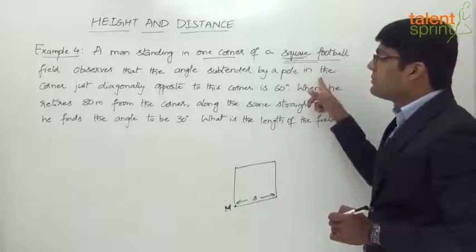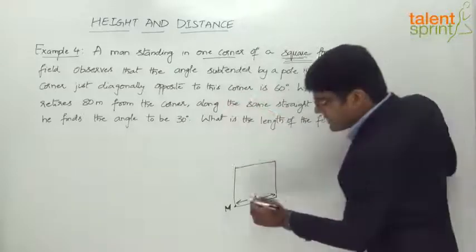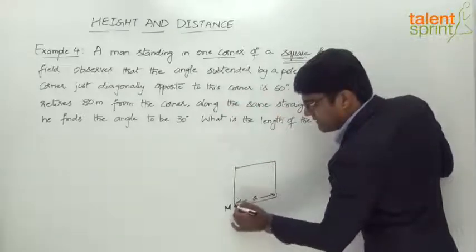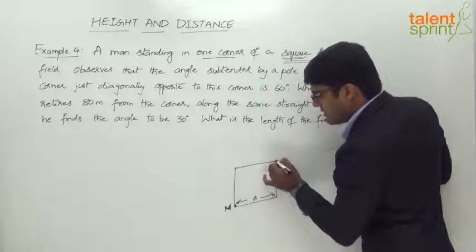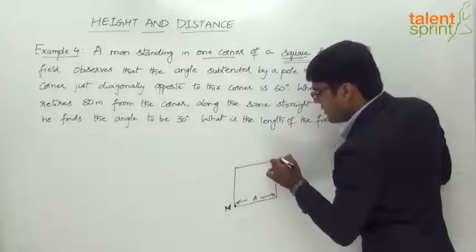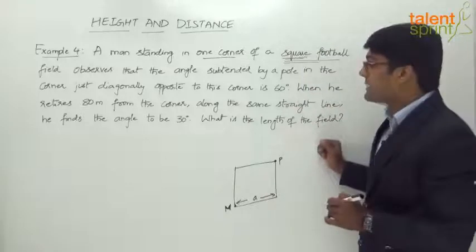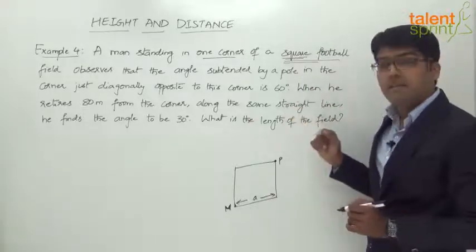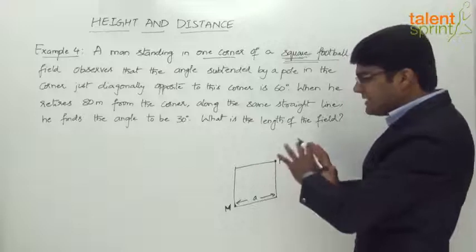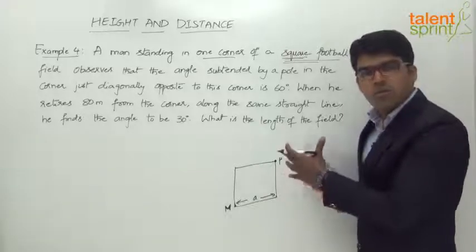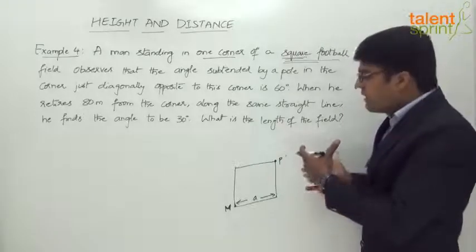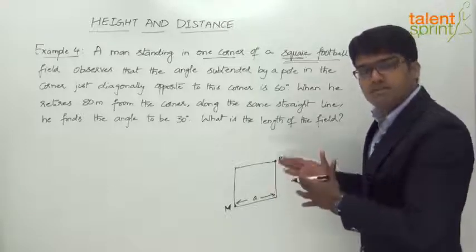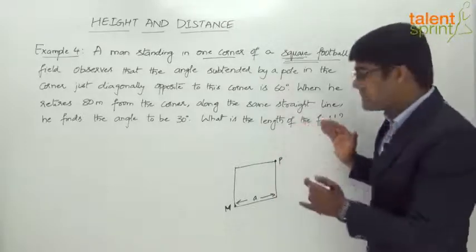The angle subtended by a pole in the corner just diagonally opposite — now what is the diagonally opposite corner? This one. So this is the corner where we have a pole. The pole is at this corner, and the angle subtended by this pole is 60 degrees. This is like a 3D diagram which I am trying to draw on the board, so you need to just have that visualization power and understand how the diagram looks.